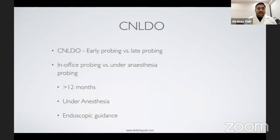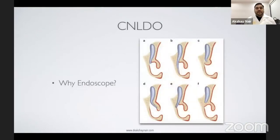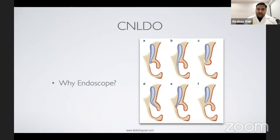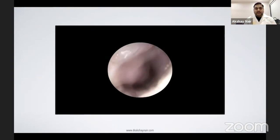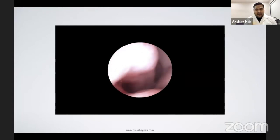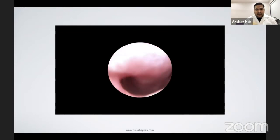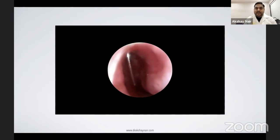Probing is done under anesthesia with endoscopic guidance, because CNLDO is not always simple — there can be complex variants including a buried probe, bony obstruction, incomplete canalization, or aberrant opening into the septum. The purpose of the endoscope is to visualize, with certainty, the probe placed through the punctum and canaliculus emerging under the inferior turbinate, where the nasolacrimal duct opening should be. Metal-to-metal contact or direct visualization is sufficient.